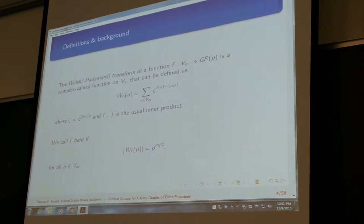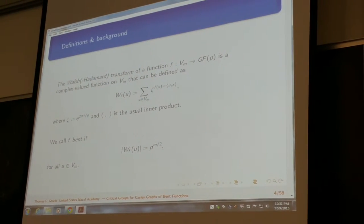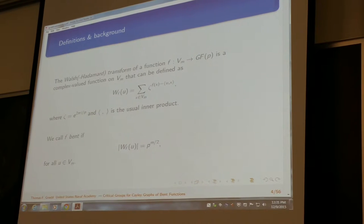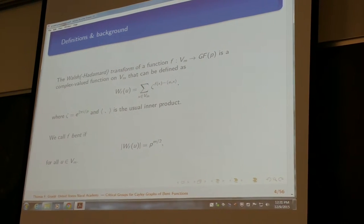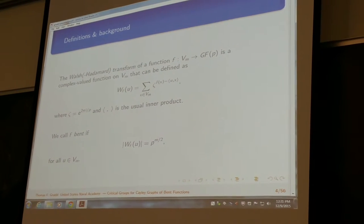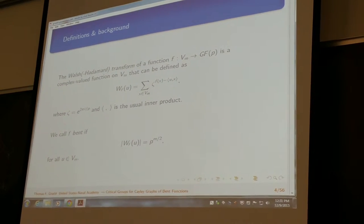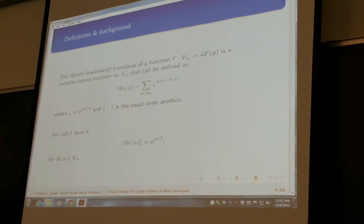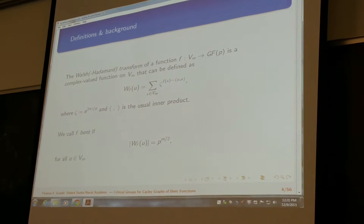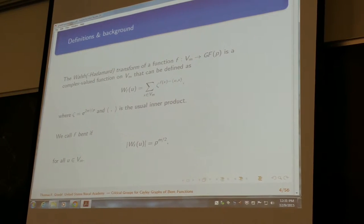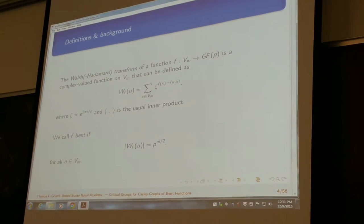A pretty big function that we used throughout my research was the Walsh-Hadamard transform of a function. It's important because it measures how non-linear a function is and is given by this equation here. I also have it written over here as equation 3 because I'll be using it later. It's mainly important because to define a function as being bent, we say that a function is bent if the size of the Walsh-Hadamard transform is equal to p to the m over 2.